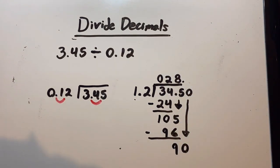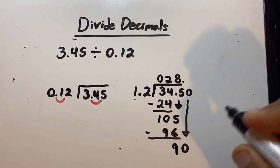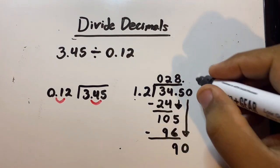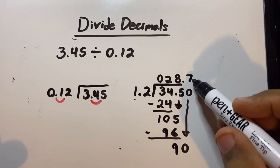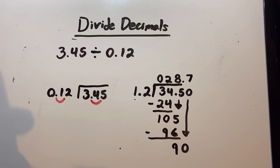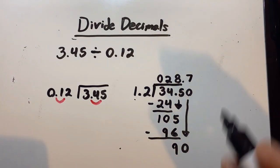So now we gotta figure out how many times 12 goes inside 90. Can anyone take a guess? It's very simple—it's seven. 12 goes inside 90 seven times, and then we repeat the process. Seven times 12 is 84.